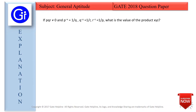Now we will see the explanation to this question. We are given that PQR is not equal to 0, P raised to the power minus X equals 1 upon Q, Q raised to the power minus Y equals 1 upon R, and R raised to the power minus Z equals 1 upon P. We need to find the value of the product XYZ.